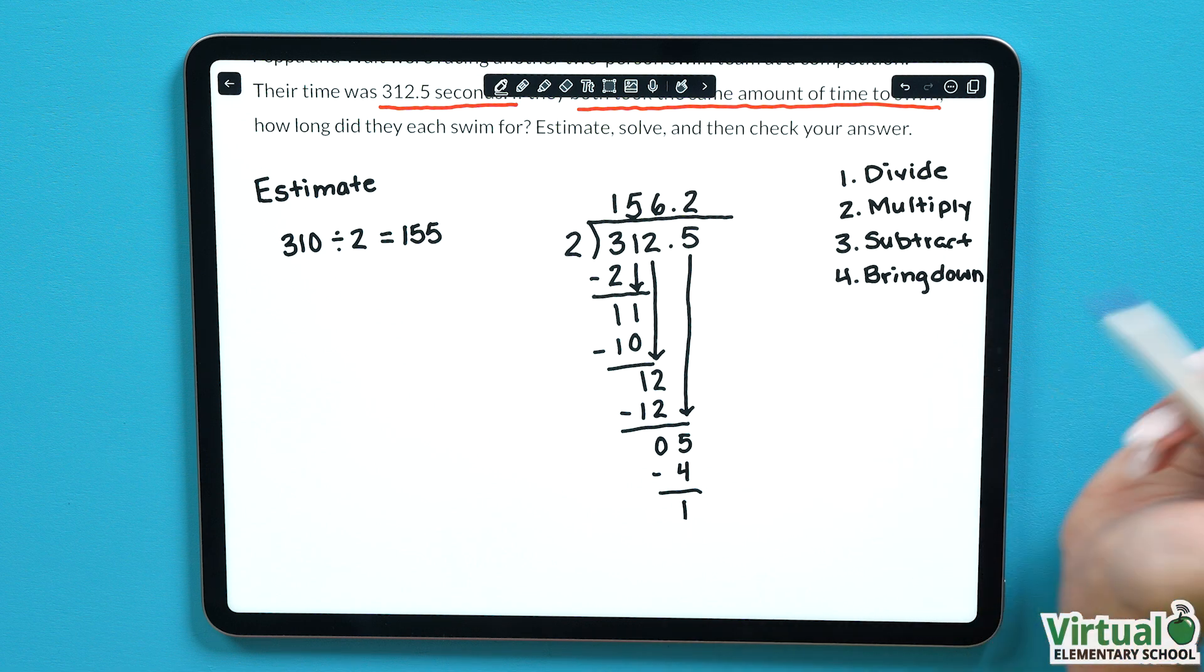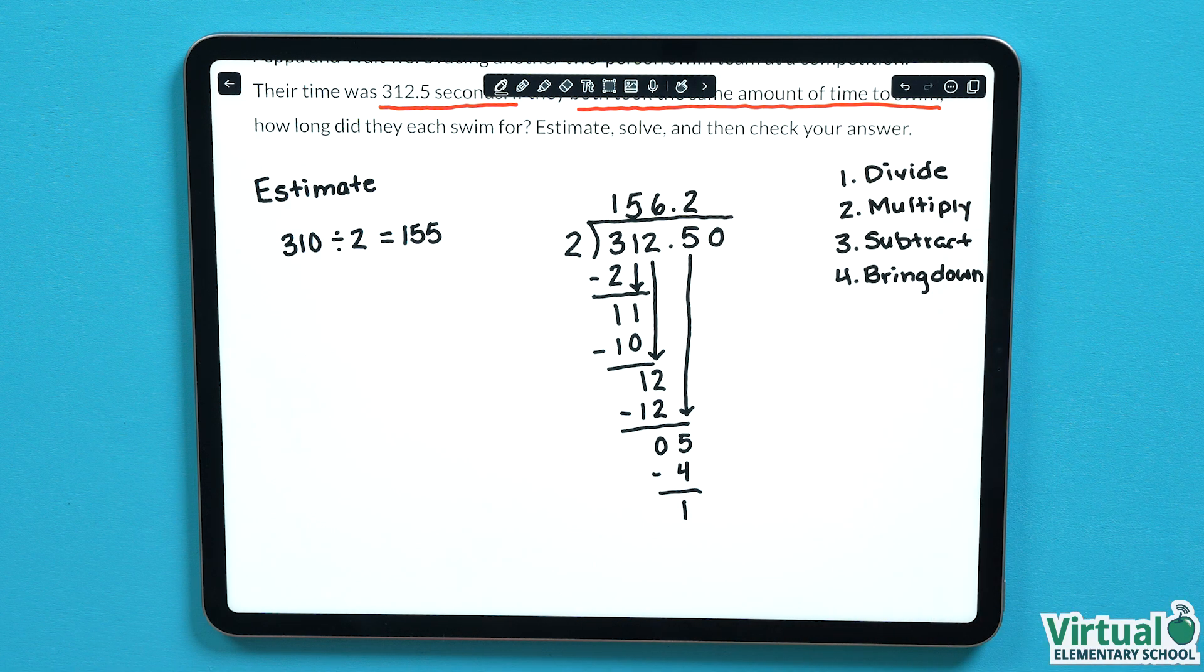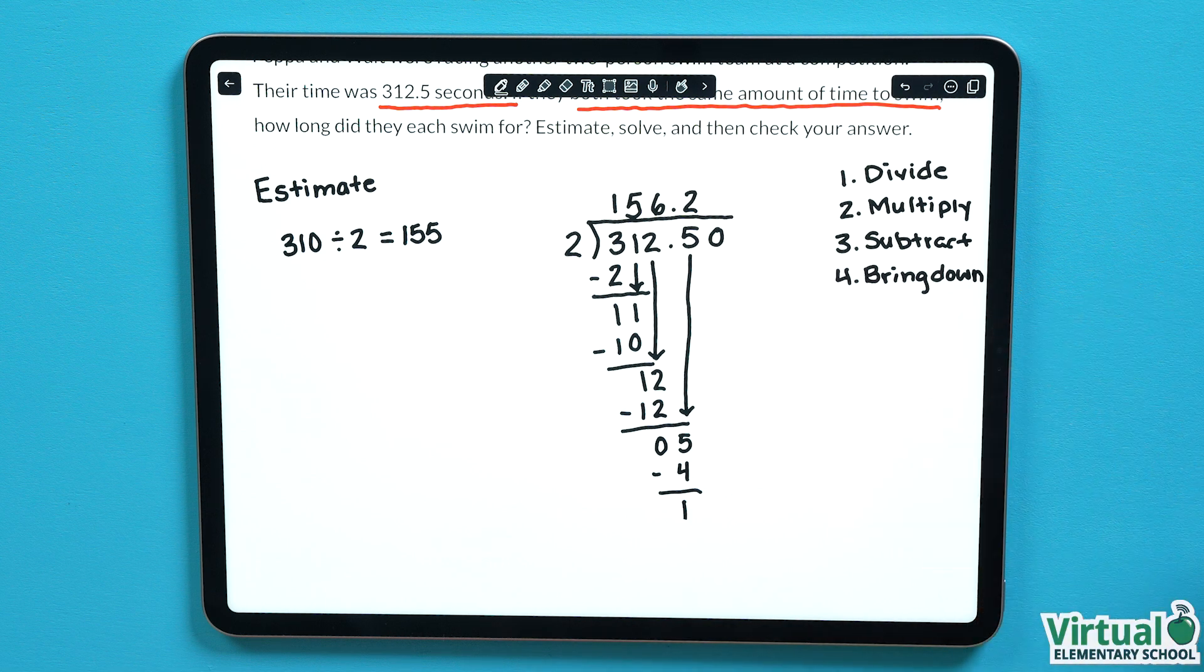Now we see that we have a remainder of 1 down here, but we don't want to leave this question with a remainder. Let's try adding a 0 to our dividend, and keep dividing. Remember, if we add a 0 at the end here, this doesn't change the value of our decimal number, it only changes the size of parts in the whole.